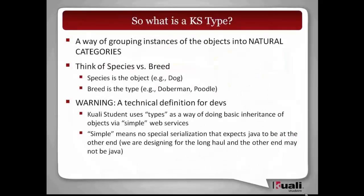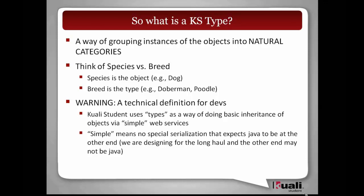So, first of all: types. What is a Kuali Student type? It really is exactly what, as a developer, you might be thinking — it's a way to do that inheritance structure that Java has. But we wanted to do it in a way that could be remoted easily. We have web services, and yes, we could have serialized Java objects back and forth to do all that inheritance. Instead, what we decided is just to name a field in the object and call it a type, and then say that that's going to control what type of sub-object this thing is — allowing us to do just some basic inheritance in the system.